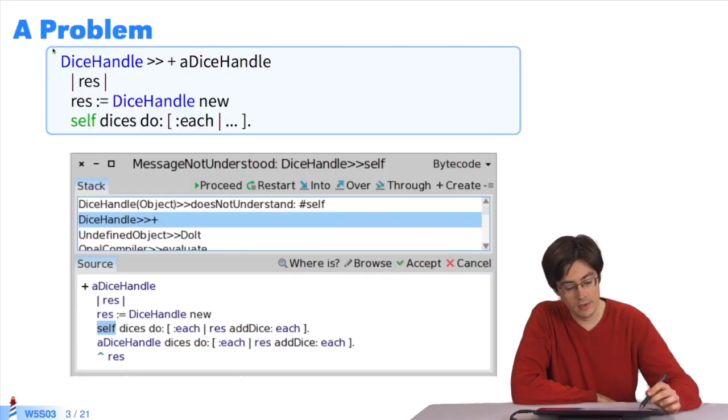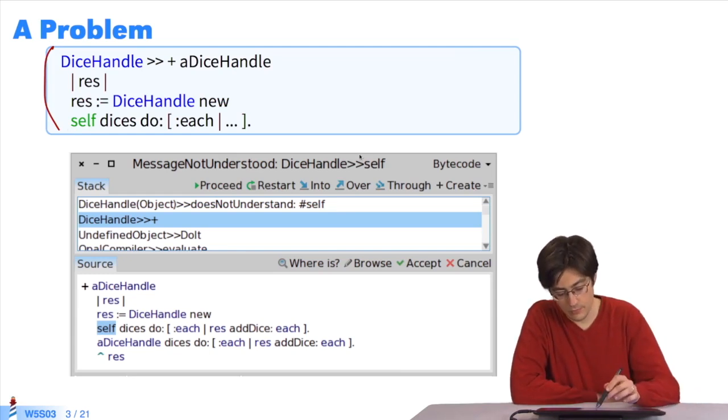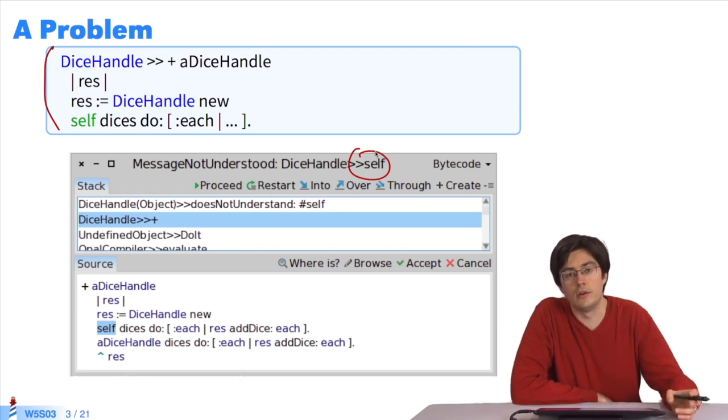Here, we have a bit of code. When it's executed, a debugger opens and tells us that the message self has been sent to an object, and this object doesn't understand the message self. We might say that self isn't a message that's sent very often, so there's probably a mistake somewhere in the code.